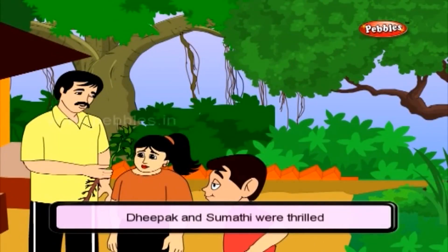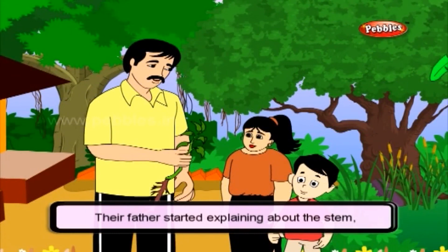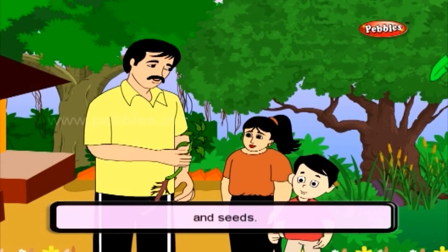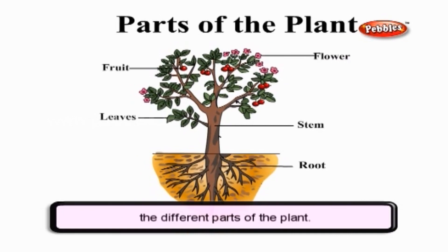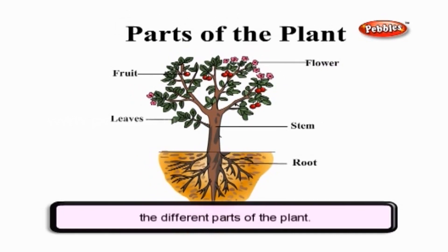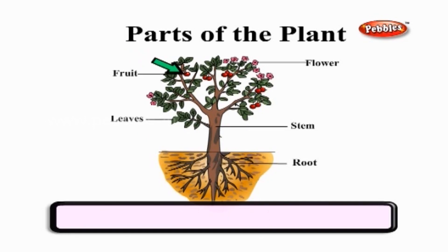Deepak and Sumati were thrilled to know about the roots. They wanted to know about the other parts of the plant as well. Their father started explaining about the stem, leaf, fruits, and seeds. 'Look children, I am going to show you the different parts of the plant. This is the root, this is the stem, this is the leaf, this is the fruit, this is the flower. Let me explain about the parts in detail.'